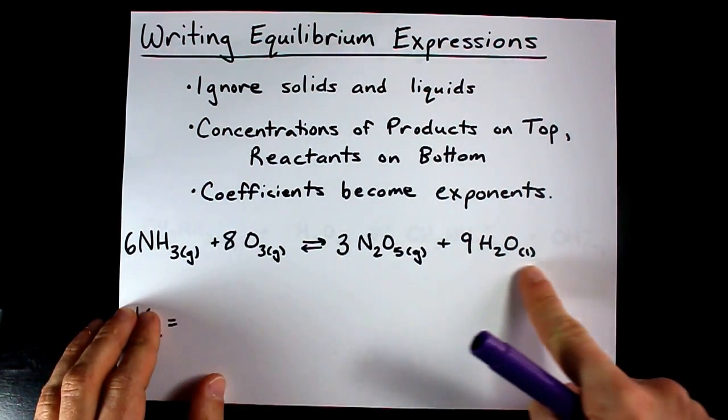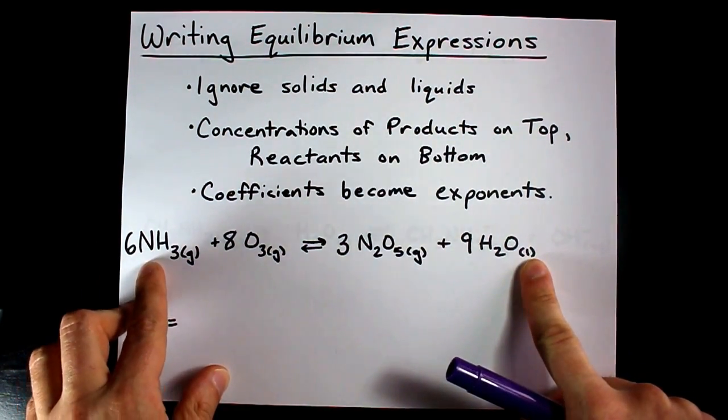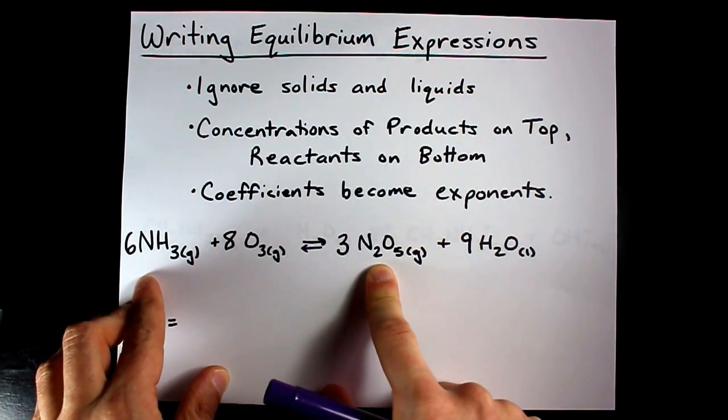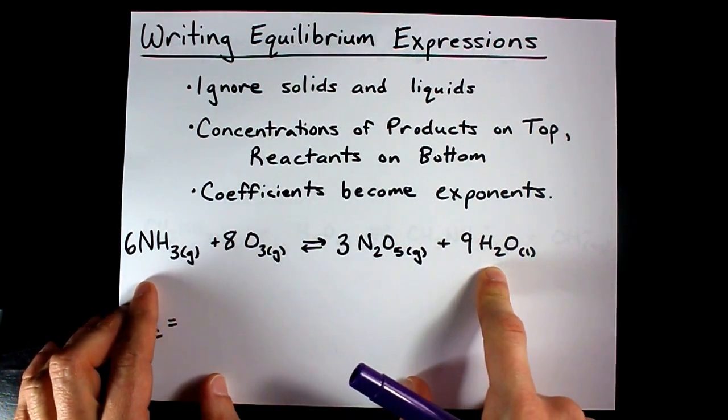Here I've already balanced this for us. Six ammonias, eight ozones, making three N2O5s and nine waters.